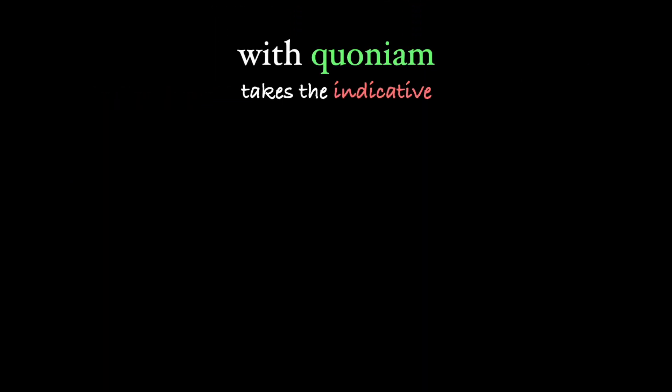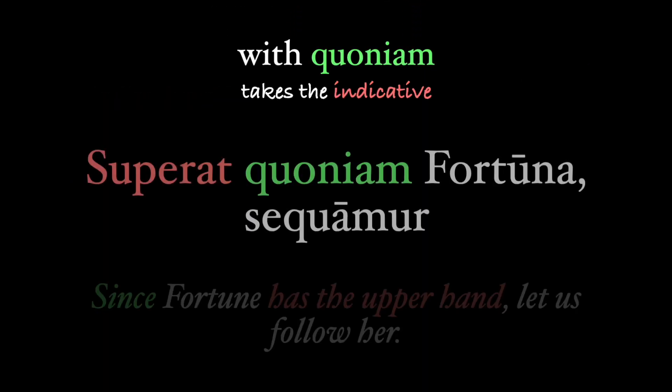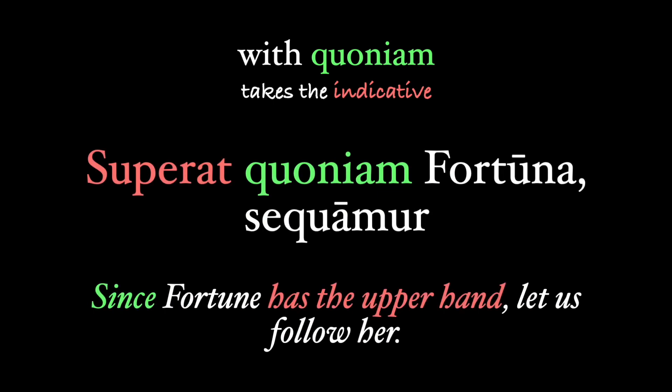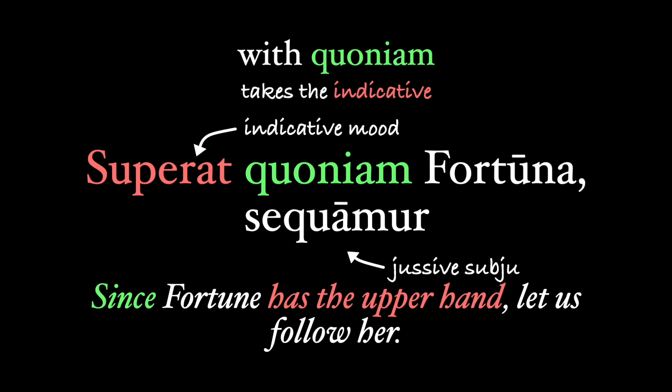In contrast with quod and quia, quoniam regularly takes the indicative, as in this bit from the Aeneid. Our verb in the quoniam clause, superat, is in the indicative mood, even though the main verb is a jussive subjunctive.